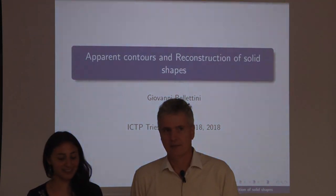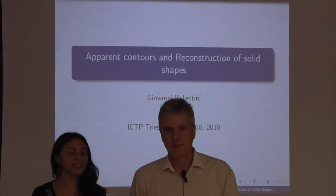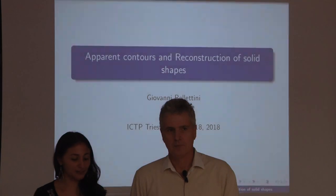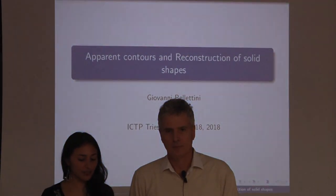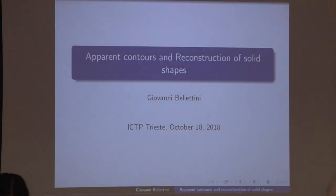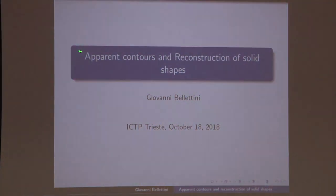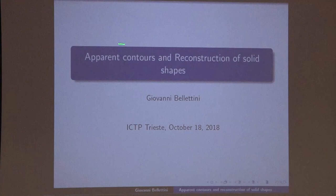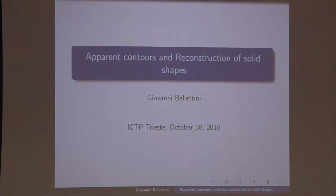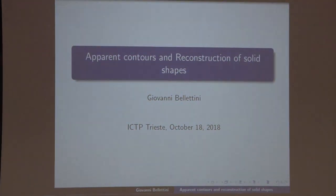It's a pleasure to present Giovanni Bellettini, a member from the UCTP, who will talk about apparent contours and reconstruction of solid shapes. The talk of today will be on apparent contours. I will try to be as simple as possible. I will explain the motivations for this work, which came from calculus of variations, but almost immediately the problem became a problem in topology.